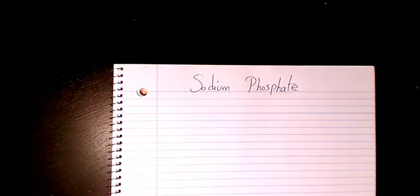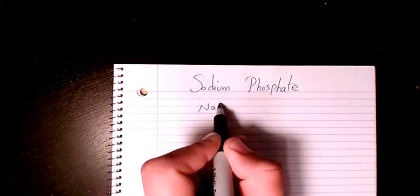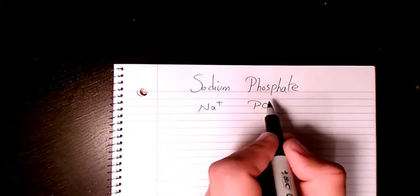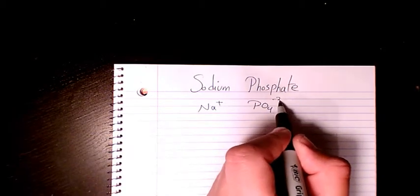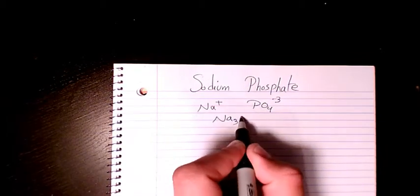and then show you how to calculate the molar mass of this compound. Sodium belongs to group one, so it's plus one. Phosphate is PO4 and the charge is negative three. So then when you combine them it's going to be Na3PO4.